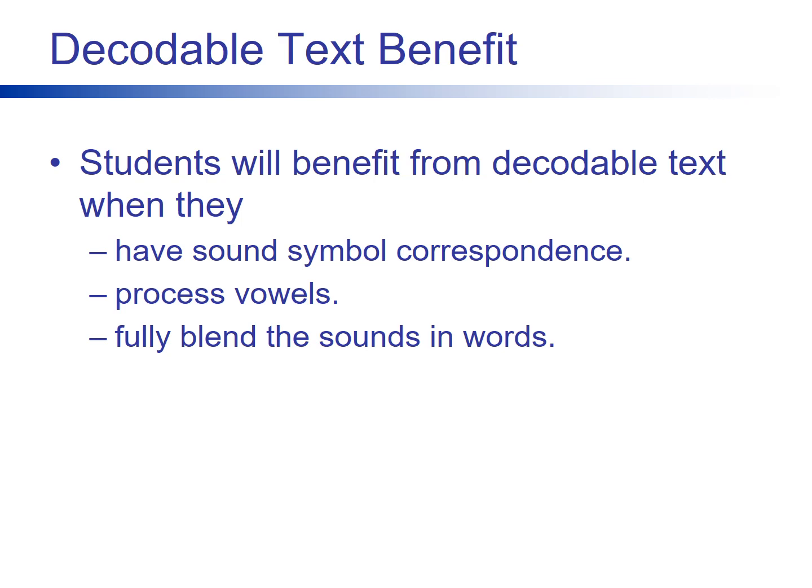When children develop sound-symbol correspondences, they are able to process vowels and fully blend the sounds in words. They should then move away from predictable text. Moving from predictable text to decodable text at this stage greatly benefits the transfer students must make from practice of phonics skills in isolation to practice transferring these skills to connected text. Only when students develop proficiency with the full scope and sequence of phonics skills should teachers transition students from decodable text to what is sometimes referred to as leveled text.